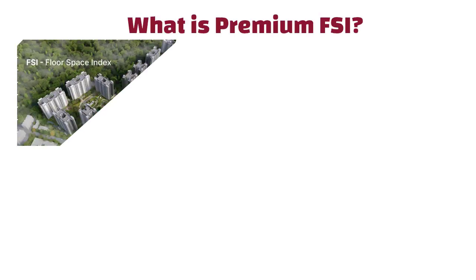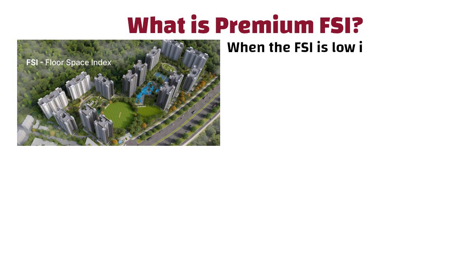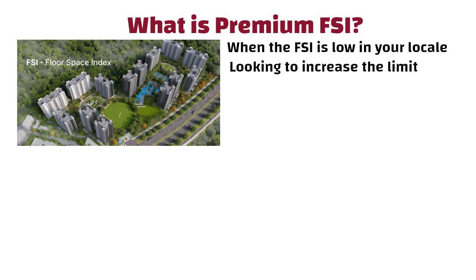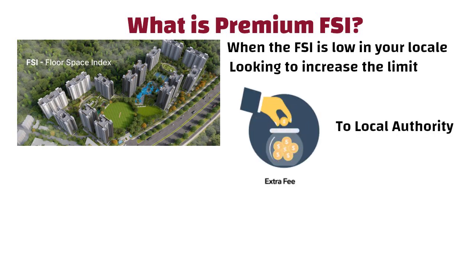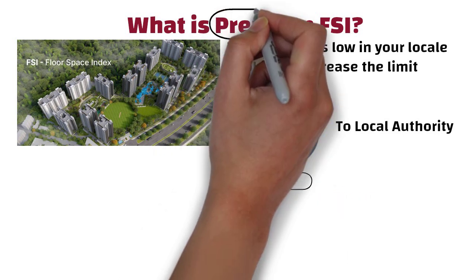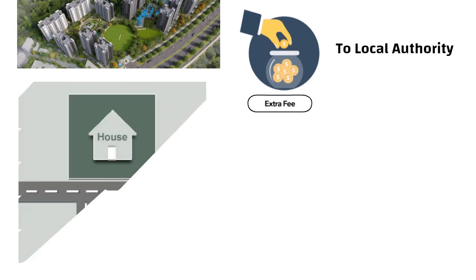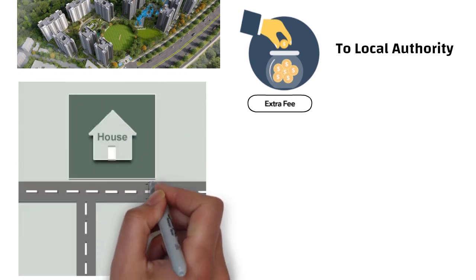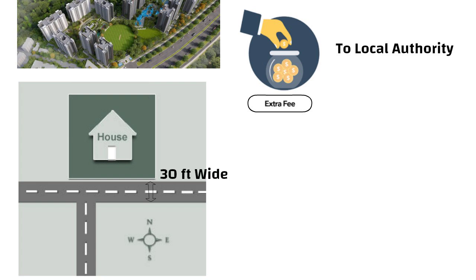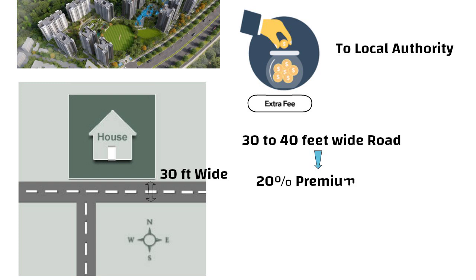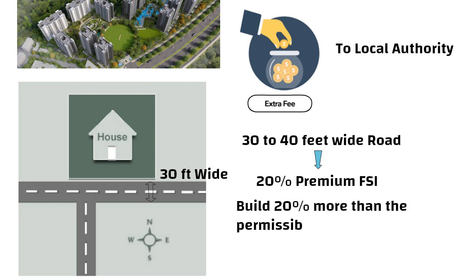First, let us understand what is premium FSI. Premium FSI comes into the picture when the FSI is low in your locality but you are looking to increase the limit. To achieve this, you would have to pay extra charges to the local authority — this charge is known as the premium FSI fund. The premium FSI is only applicable if the adjoining road of the land is at least 30 feet wide. If there is a 30 to 40 feet wide road adjacent to the plot, then you can avail a premium FSI of 20%, meaning you can build 20% more than the permissible FSI.